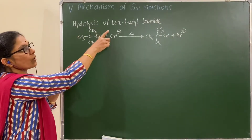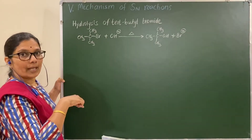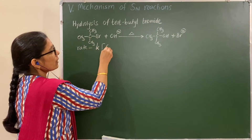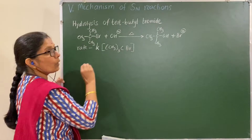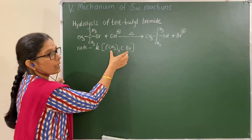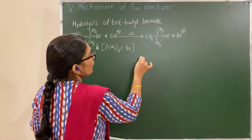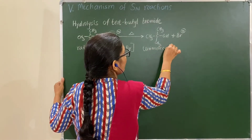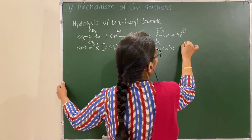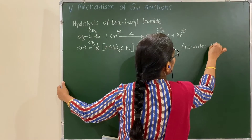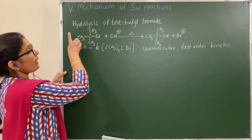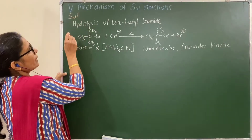Let us see the mechanism of hydrolysis of tert-butyl bromide. The rate expression obtained from kinetic study is: rate = k[tert-butyl bromide]. The rate depends on the concentration of tert-butyl bromide only, meaning only one molecule is involved in the slow step. Therefore, it is unimolecular and follows first-order kinetics — it is a first-order reaction.